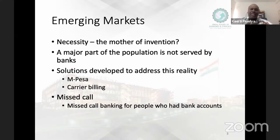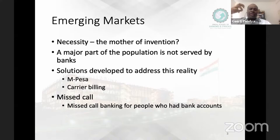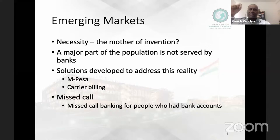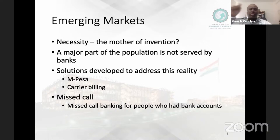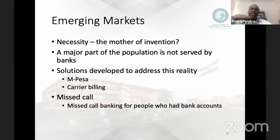Banks utilized this missed call behavior. India's largest bank, State Bank of India, has a feature where depending on which number you call, you receive an SMS response. Call the first number and you get your available balance; call the second number and you get a snapshot of your last five transactions. If you want to know what credit card or loan offers are available, you call a different number and immediately get an SMS or a callback from a sales executive. Banks took a behavioral activity of the population and customized it to suit banking requirements.